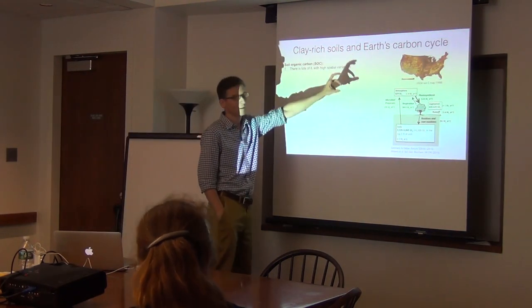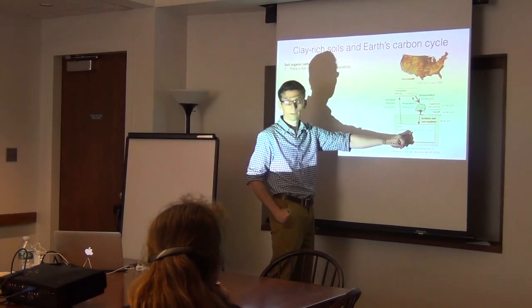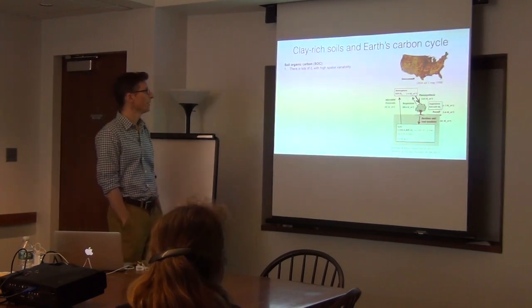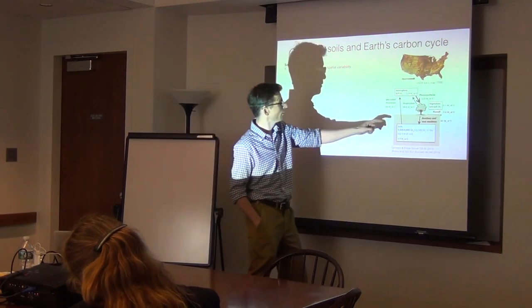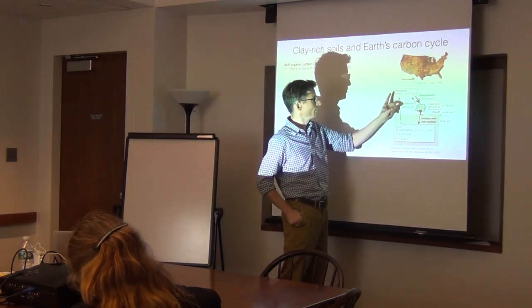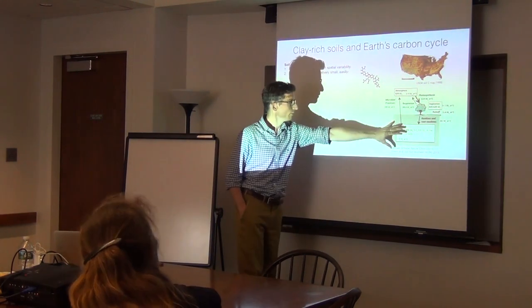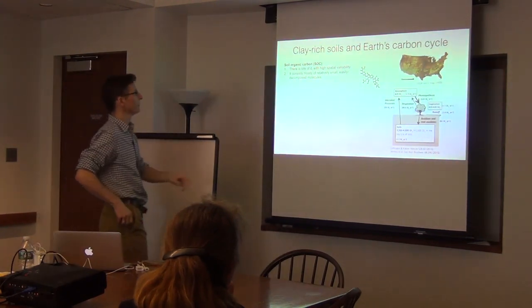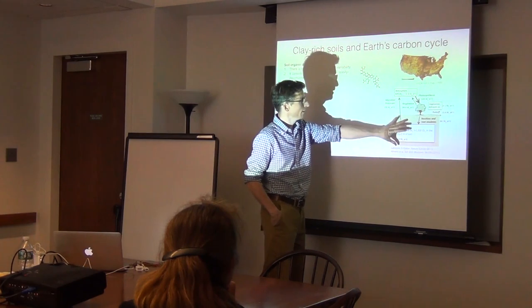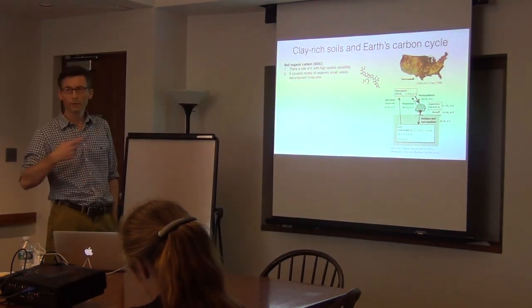We're also interested in smectites because of their role in the Earth's carbon cycle. There's a lot of soil organic carbon — by some estimates about 4,000 megatons of carbon in soils, mostly organic. That's about five times more than what's in the atmosphere, and more than the atmosphere, biosphere, and surface ocean combined. What people have found in the last five to ten years is that this soil organic carbon actually consists predominantly of small organic molecules — at least half of it consists of molecules with masses around 500 daltons.